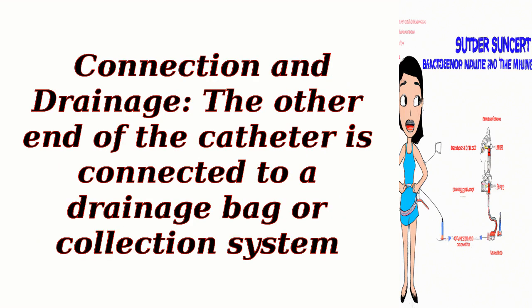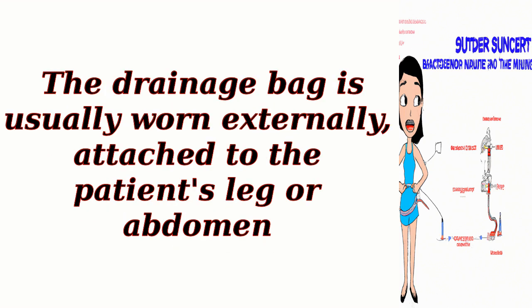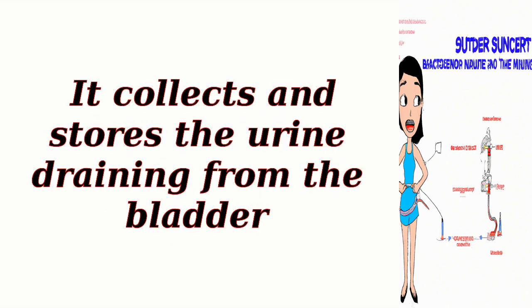Step 7: Connection and drainage. The other end of the catheter is connected to a drainage bag or collection system. The drainage bag is usually worn externally, attached to the patient's leg or abdomen, and collects and stores the urine draining from the bladder.